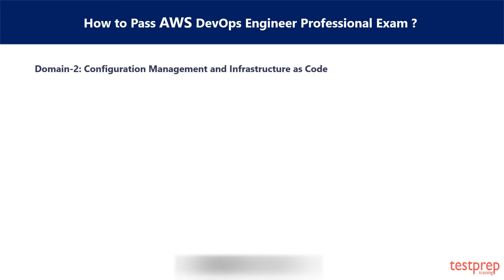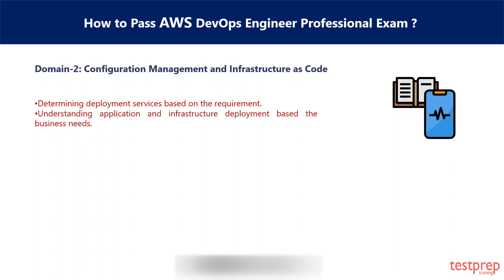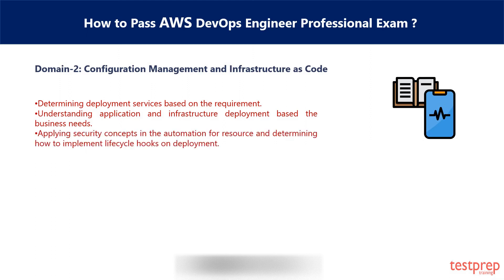Domain 2 is Configuration Management and Infrastructure as Code. This domain covers 19% weightage of questions in the exam. The sections covered are: 1. Determining deployment services based on the requirement. 2. Understanding application and infrastructure deployment based on business needs. 3. Applying security concepts in automation for resources and determining how to implement lifecycle hooks on deployment. 4. Applying concepts required for managing systems using AWS management tools and services.